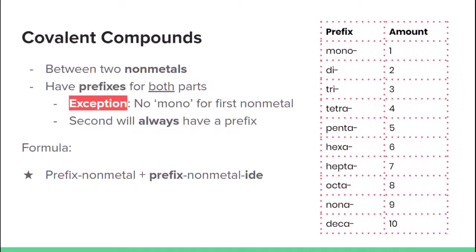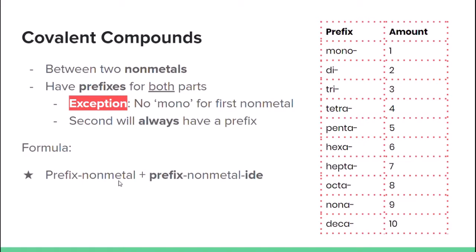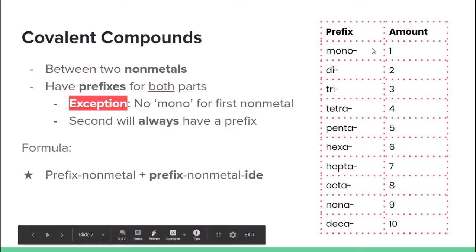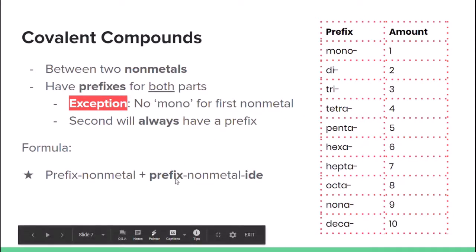Now we're going to name covalent compounds. Covalent compounds are between two non-metals, and we use prefixes instead of focusing on charge — we focus on the amount of each element in the compound. An important exception: there's no 'mono' prefix for the first non-metal. If there's only one of the first non-metal, we just use its name as-is. The second element will always have a prefix and its ending changed to -ide.